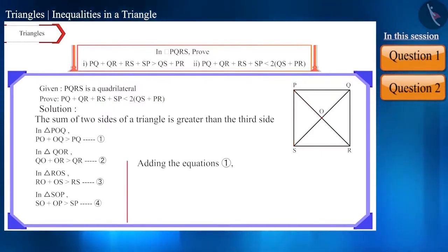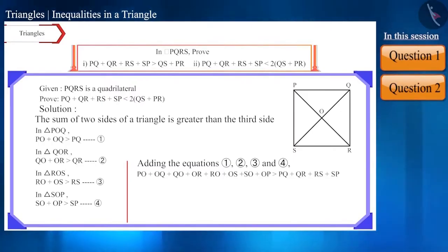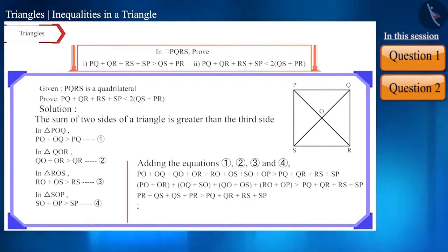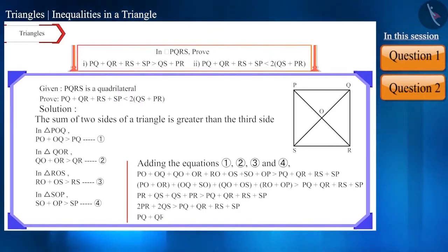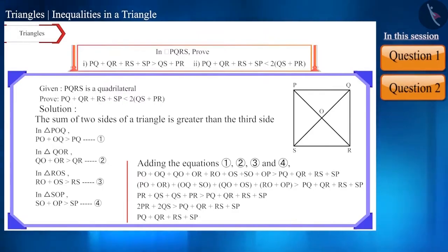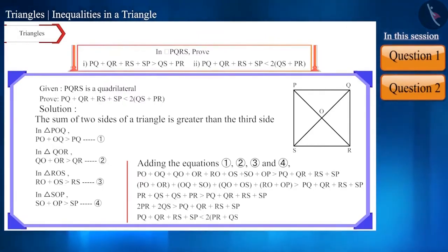Now, if we add all four inequalities and simplify, we get: PQ + QR + RS + SP is less than 2(PR + QS). Thus, this has also been proved.